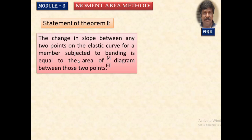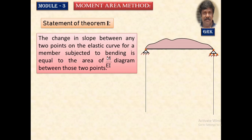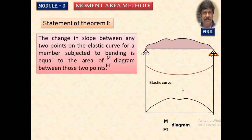The very first theorem states that the change in slope between any two points on an elastic curve for a member subjected to bending is equal to the area of the M/EI diagram between those two points. To understand this statement, let us consider a simply supported beam subjected to any type of varying loading system. For this, let us draw the elastic curve and the bending moment diagram. If the bending moment diagram is divided by EI, the rigidity modulus of the section, this diagram is called the M/EI diagram.